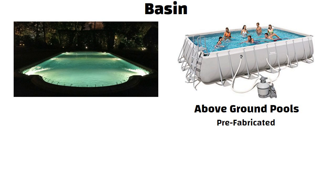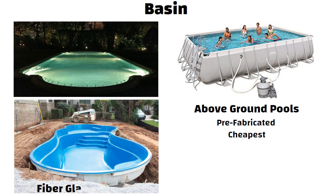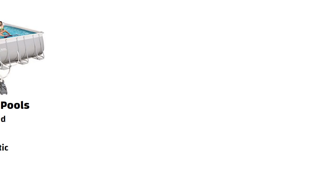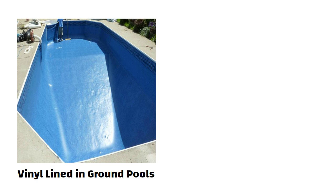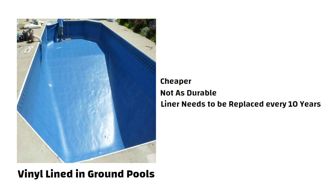Basin. The main difference between different types of pools is how the basin is constructed. 1. Aboveground pools are generally prefabricated and the cheapest option. 2. Fiberglass pools are made from fiberglass reinforced plastic. 3. Vinyl lined in-ground pools. These pools are a lot cheaper than other in-ground designs, but not as durable.